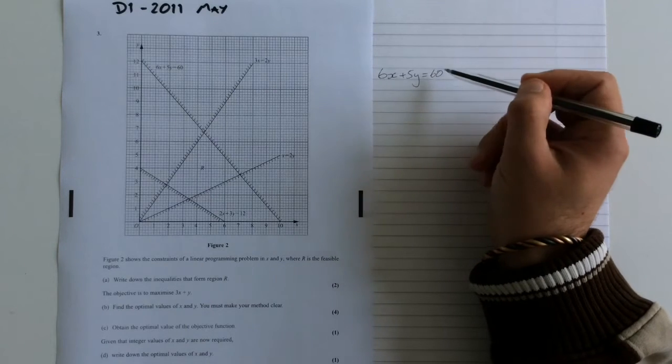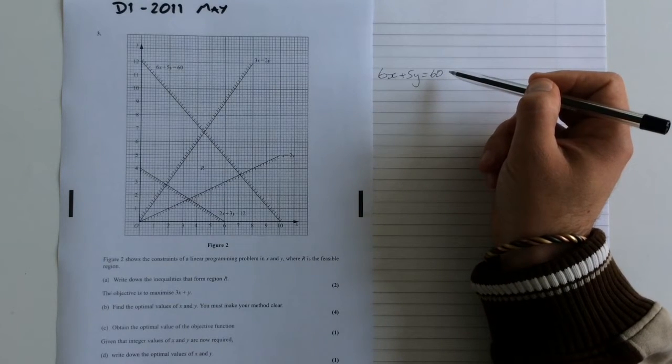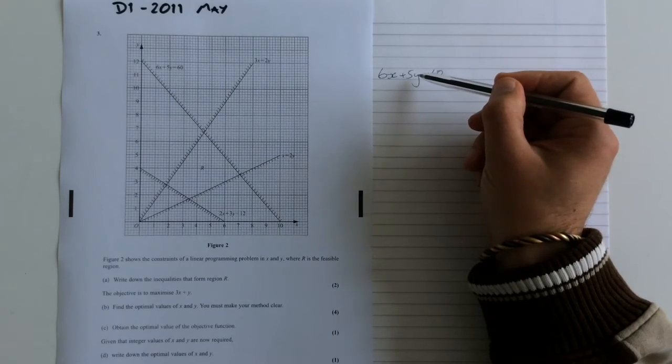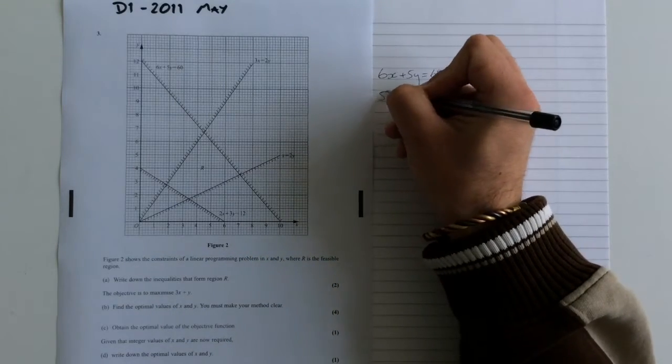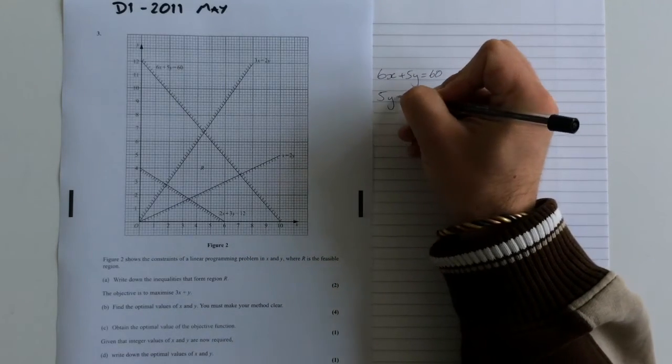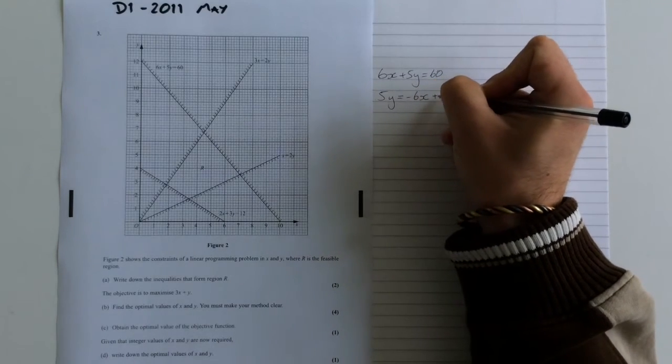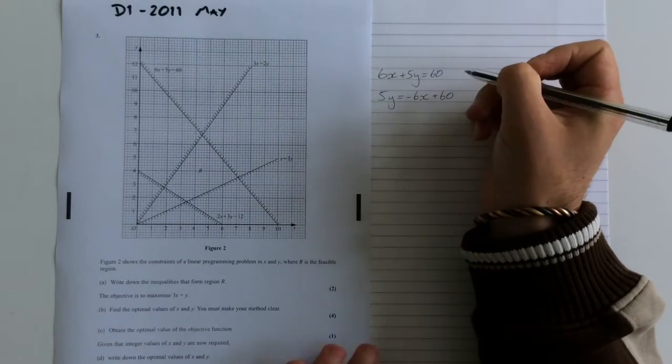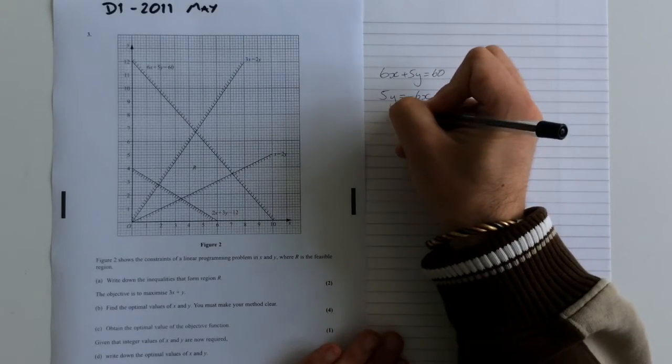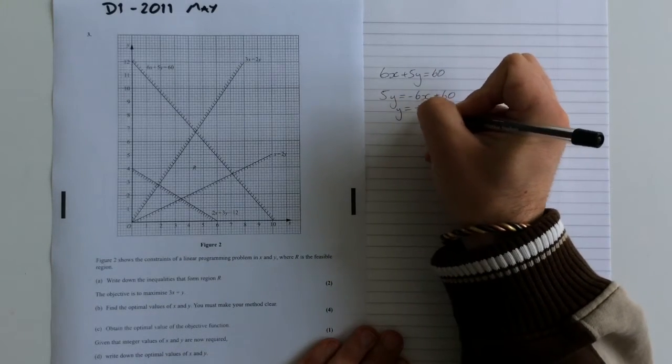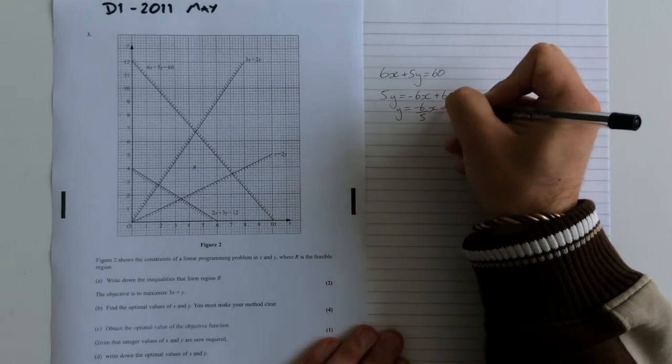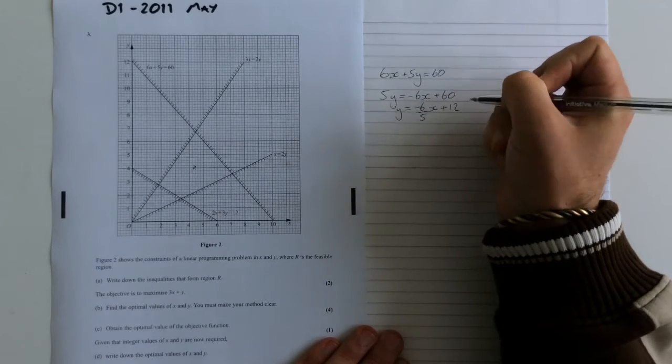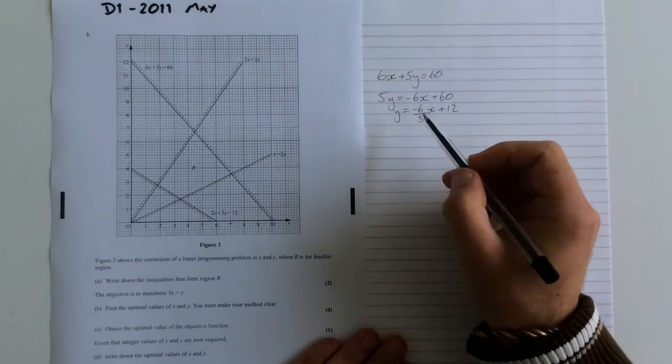Some people can look at this and see exactly which way round it's got to go. Other people maybe not so much. So what I'm going to do is I'm going to rearrange that equation to give 5y equals minus 6x plus 60. And then I'm going to rearrange that just to be y equals minus 6 over 5x plus 60 over 5 is 12.